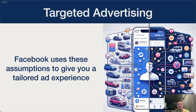Facebook then uses these assumptions to give you a tailored ad experience. They do this by providing advertisers access to a vast network of interest categories and other demographic information, which advertisers can use to target specific ads to specific demographics. For example, Apple may want to start an ad campaign to get existing iPhone users to upgrade to the newest iPhone. They can use Facebook to send targeted advertisements specifically to existing iPhone users, saving them advertising costs by not showing the ads to a potentially irrelevant audience. It's important to understand that these systems not only allow advertisers to show ads to an audience that share a specific interest, but also allow advertisers to explicitly exclude groups of people from being shown specific ads.